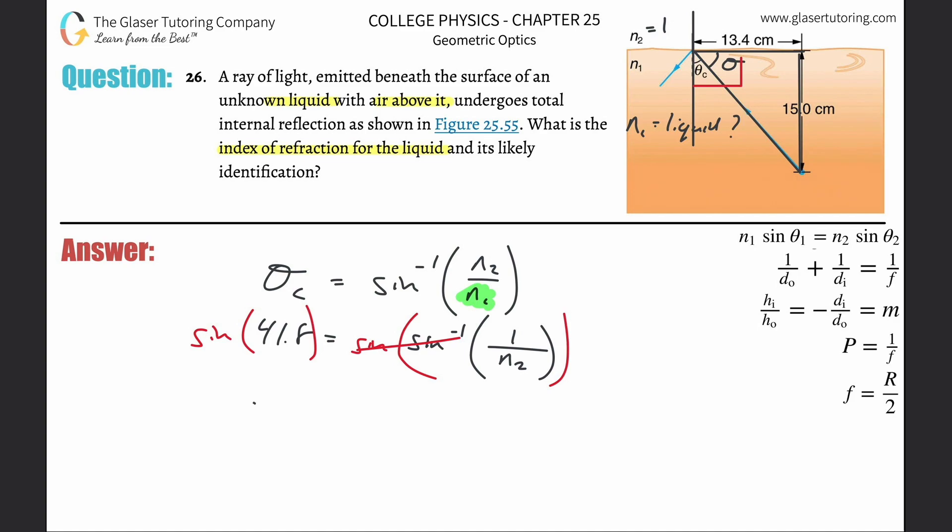Simply cross multiply - n1 is equal to 1 divided by that value: 1.501. So n1 equals 1.501. Now we can look this up on a table and figure out what the material is.